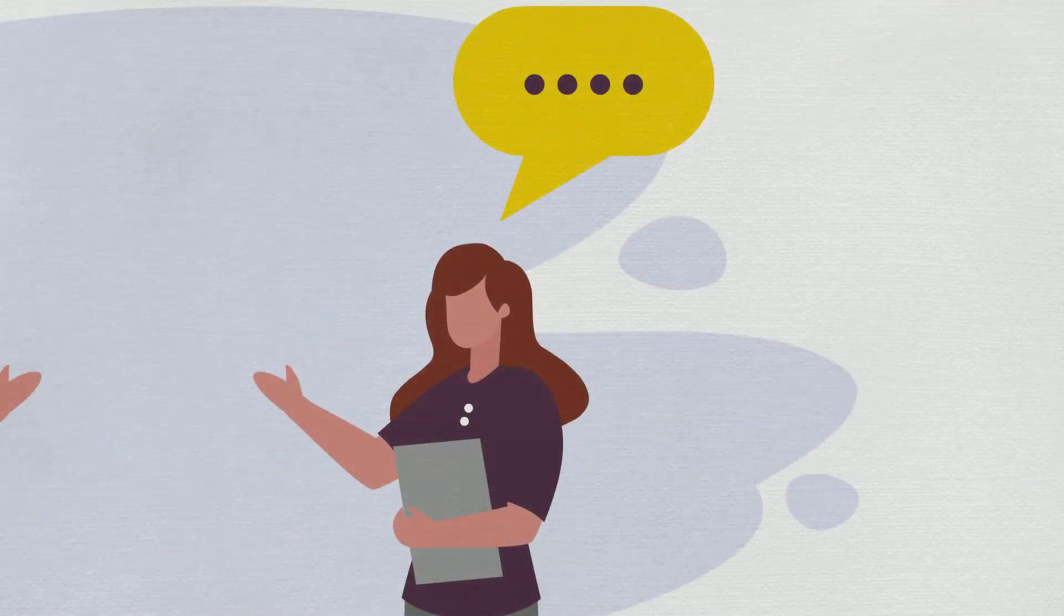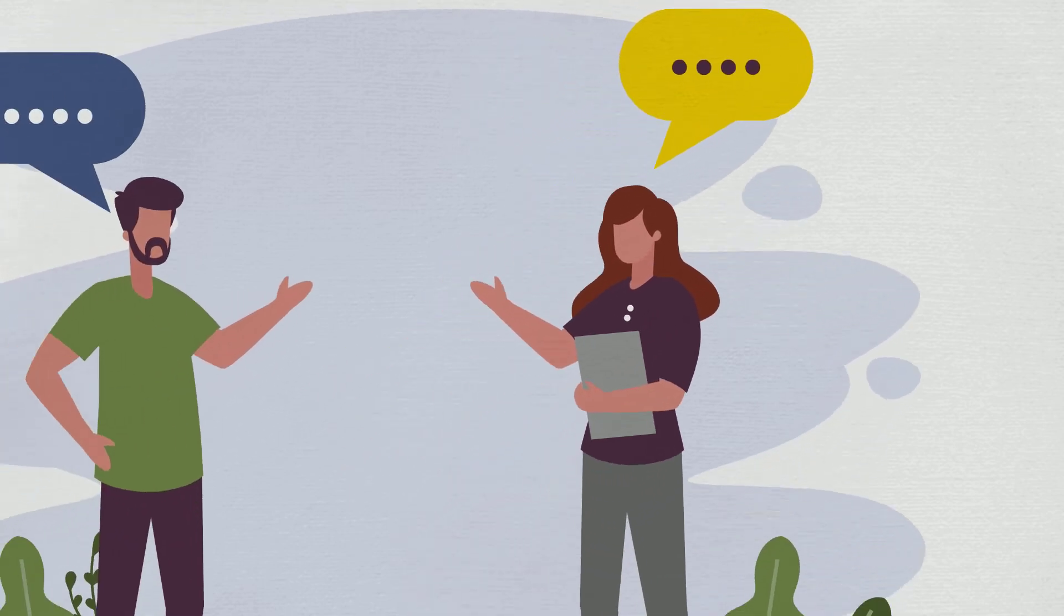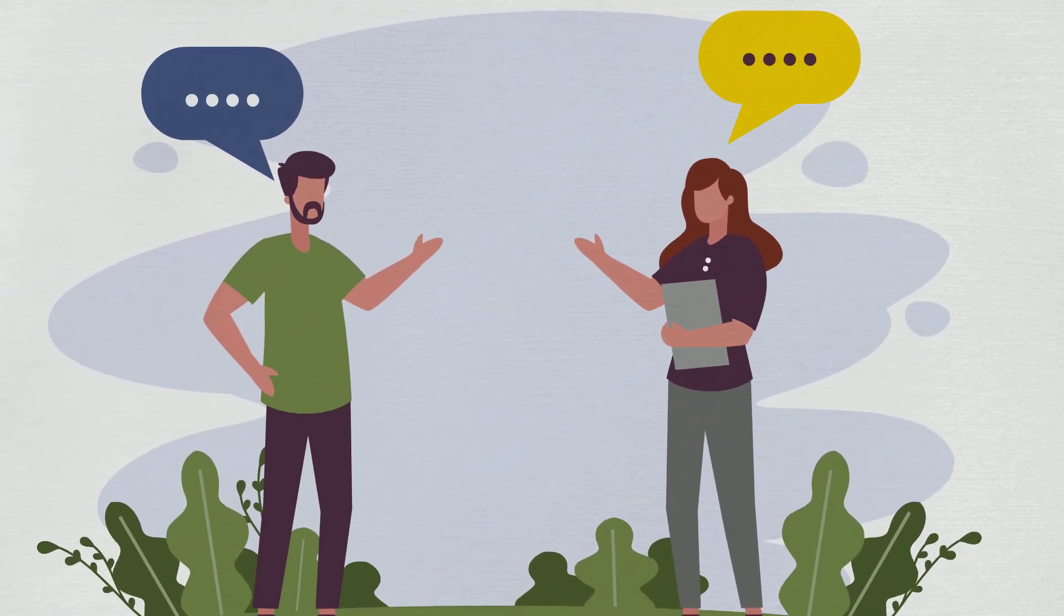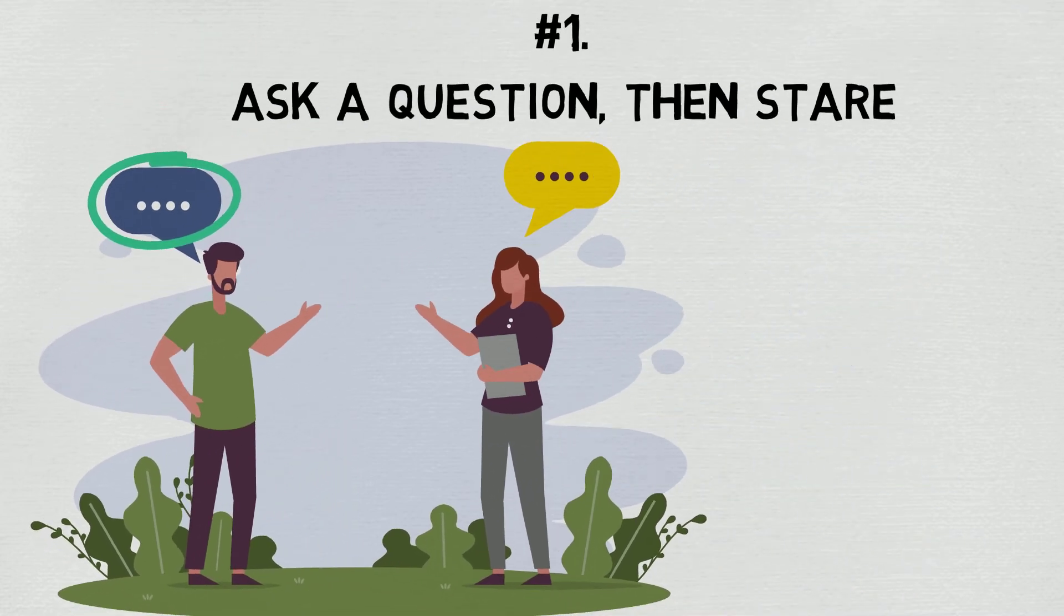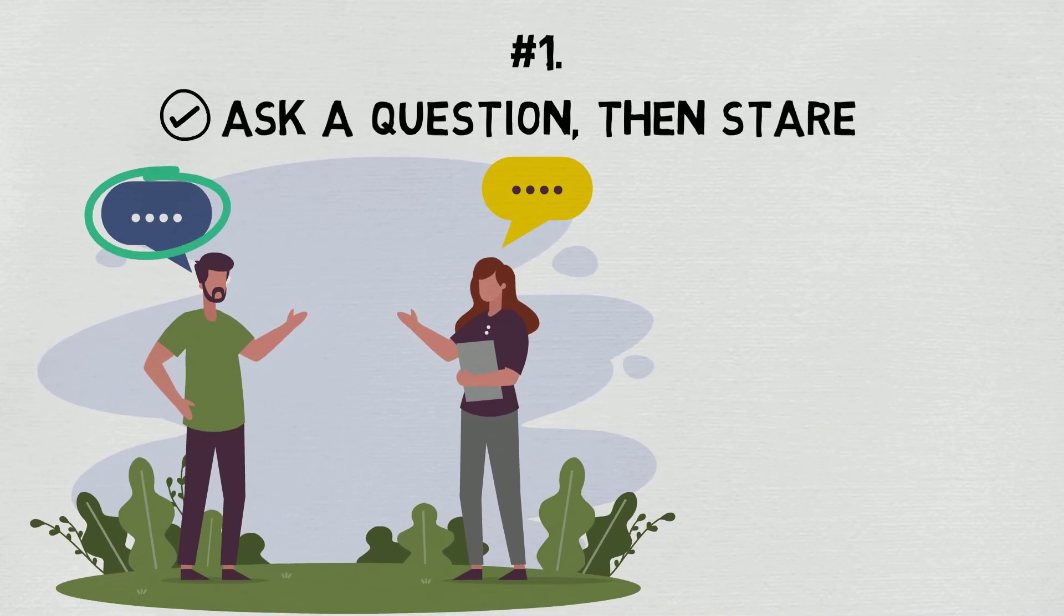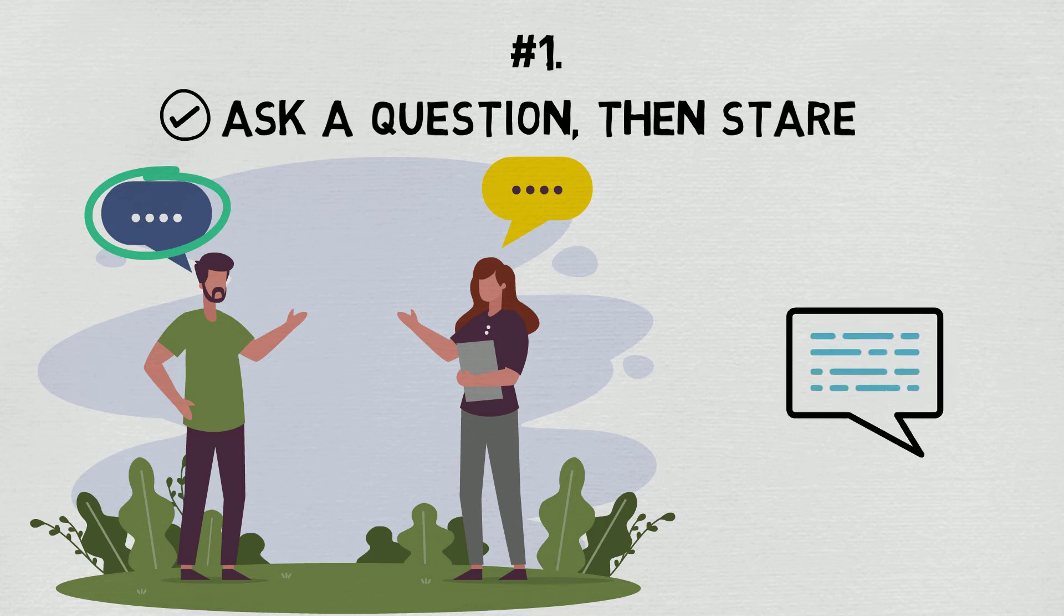Let's go! Number one, ask a question then stare. We've all asked a friend a question only to have them give us a short or incomplete answer. If you find yourself in this situation, there's a psychological trick that will help you get the information you need.